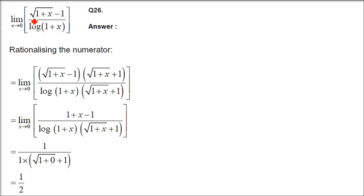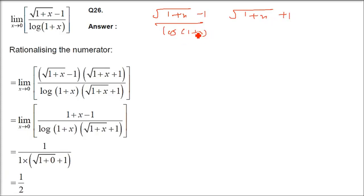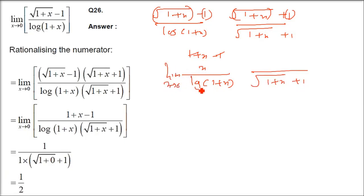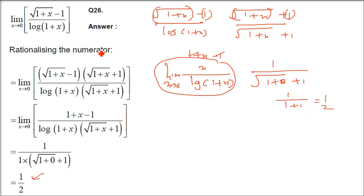Question 26: limit x→0 of (√(1+x) - 1)/log(1+x). Multiply by RF: multiply by (√(1+x)+1)/(√(1+x)+1). Numerator becomes (1+x)-1 = x. Denominator: log(1+x)·(√(1+x)+1). So x/log(1+x) → 1, and denominator has (√(1+x)+1). As x→0, √(1+0)+1 = 2. The answer is 1/2.